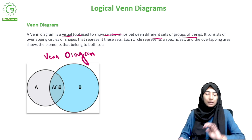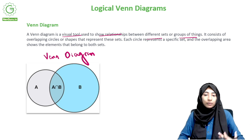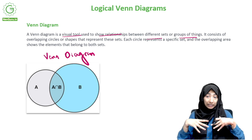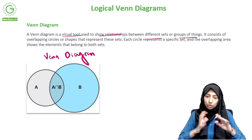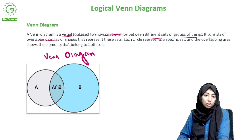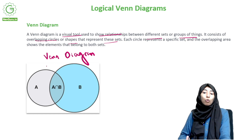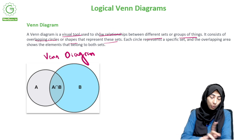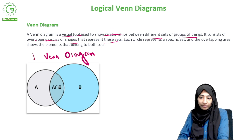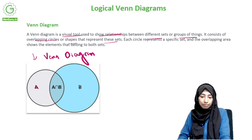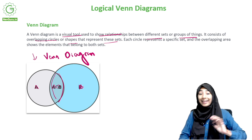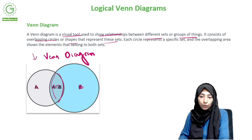Venn diagrams can be of any form, but mostly they are circles - either overlapping circles or shapes that represent sets. Each circle represents a specific set, and the overlapping area shows the element that belongs to both sets. So if this circle is A and this circle is B, the overlapping area is A intersection B.